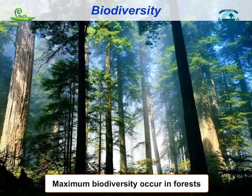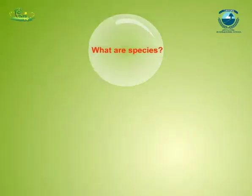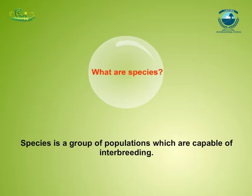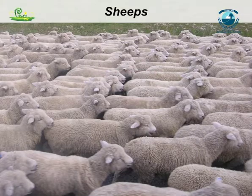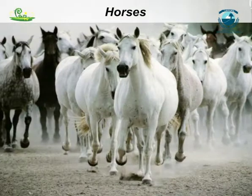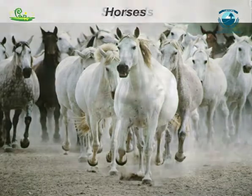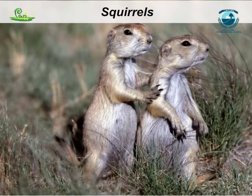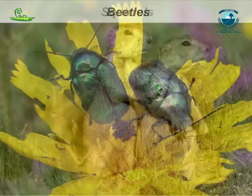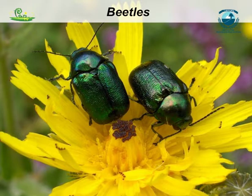Many species of plants and animals are found in the forests. Species is a group of populations which are capable of interbreeding. This means that the members of a species can reproduce fertile offspring only with the members of their own species and not with the members of other species. Members of a species have common characteristics.